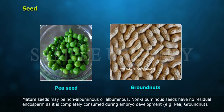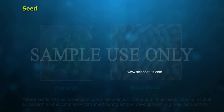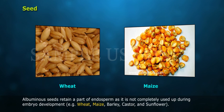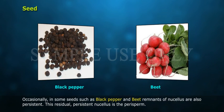Mature seeds may be non-albuminous or albuminous. Non-albuminous seeds have no residual endosperm, as it is completely consumed during embryo development — for example, pea and groundnut. Albuminous seeds retain a part of endosperm, as it is not completely used up during embryo development — for example, wheat, maize, barley, castor, and sunflower.